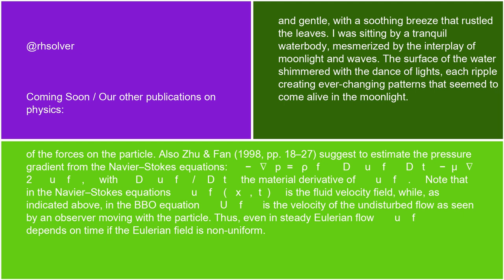Note that in the Navier-Stokes equations uf(x,t) is the fluid velocity field, while, as indicated above, in the BBO equation uf is the velocity of the undisturbed flow as seen by an observer moving with the particle. Thus, even in steady Eulerian flow, uf depends on time if the Eulerian field is non-uniform.